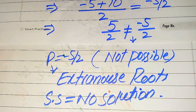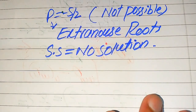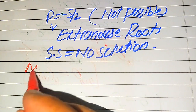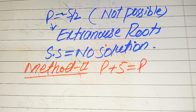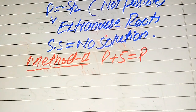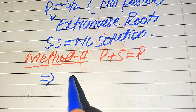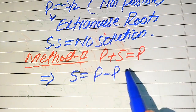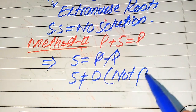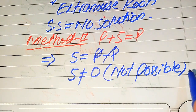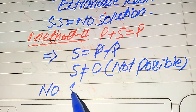This is the final answer from the first method. Now we solve this problem using the second method. The given equation is √(p+5) = p. In the second method — the direct method — we move p to the right hand side: √(p+5) − p = 0, and simplifying we get 5 = 0. This shows that 5 is not equal to 0, which is an impossible case. Therefore our final conclusion is that this equation has no solution.